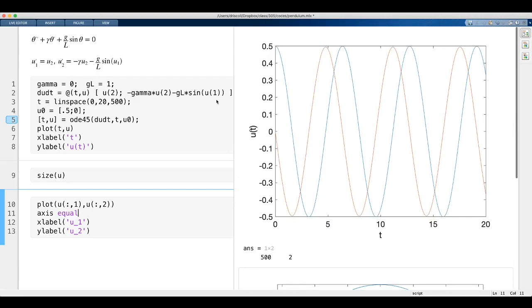Now you may know for small angles, we can say, we can use the approximation that sine theta is nearly theta, and then this is a linear equation.